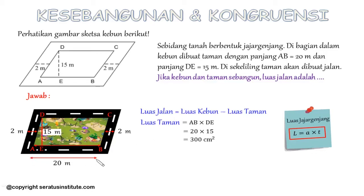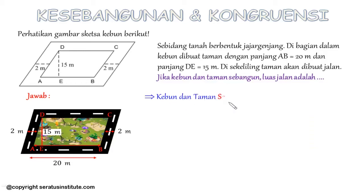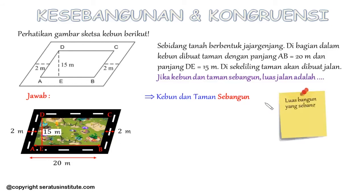Terus bagaimana untuk mencari luas kebunnya? Di sini tinggi kebunnya tidak diketahui. Diketahui di soal bahwa kebun dan taman sebangun. Masih ingat sifat-sifat luas bangun yang sebangun? Jadi luas bangun yang sebangun itu perbandingan luasnya berbanding dengan perbandingan sisinya dikuadratkan. Jadi tidak perlu dicari luasnya satu per satu.